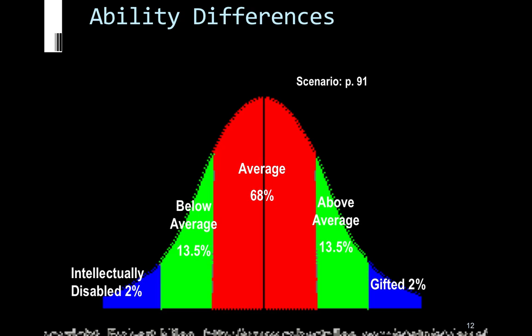Let's talk about ability differences. Most people fall on the average scale — about 68 percent on a traditional bell curve. About 2 percent of students are intellectually disabled, 13 percent are below average, 13 percent are above average, and about 2 percent are considered gifted. Most students will come to you with average academic ability, but the question is how do we include kids on either side of this bell curve.